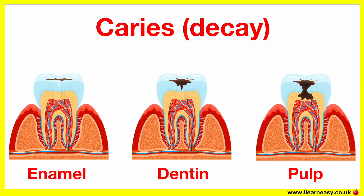Caries, also known as tooth decay. Dental caries is the destruction of tooth structure caused by acids produced by bacteria in dental plaque. Over time, the acids break down enamel and can progress deeper into dentin and eventually the pulp, if untreated. This can lead to irreversible complications, including the loss of the tooth.